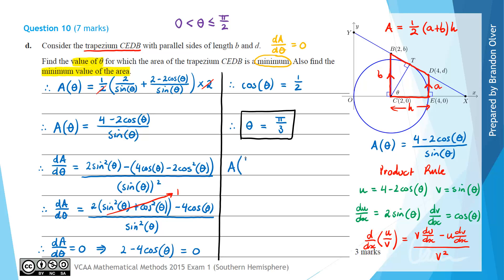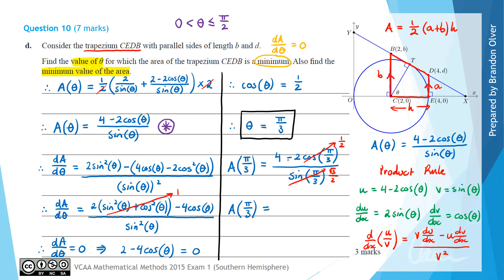Next we find the minimum area by substituting θ = π/3 into the area equation (4 − 2cos(θ)) / sin(θ). We get (4 − 2·(1/2)) divided by (√3/2), which is (4 − 1) divided by (√3/2), giving 3 divided by (√3/2). Dividing by √3/2 is the same as multiplying by 2/√3, so the minimum area equals 6/√3, which simplifies to 2√3.